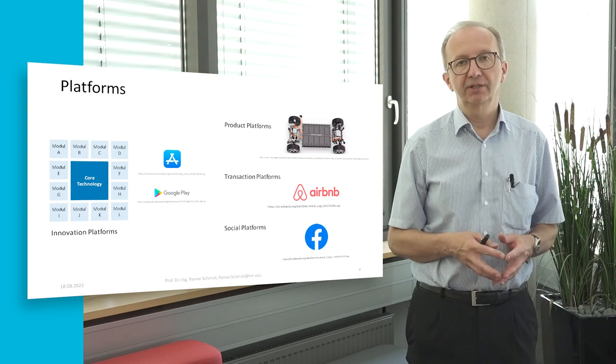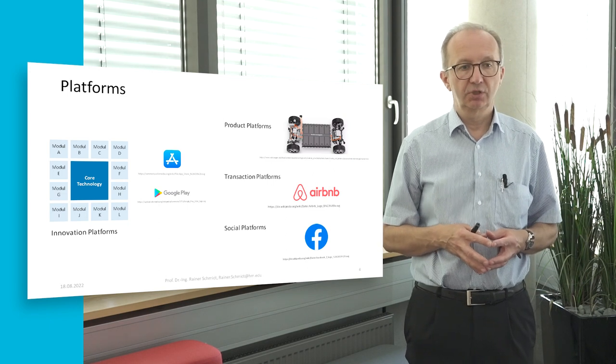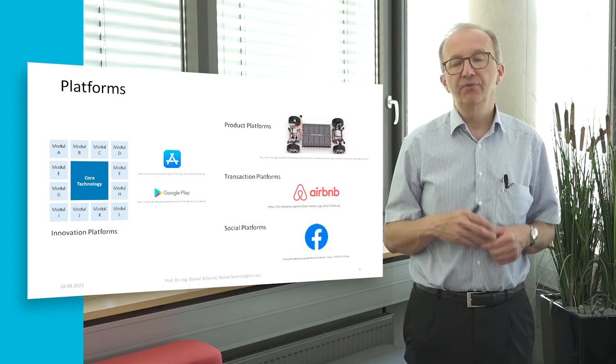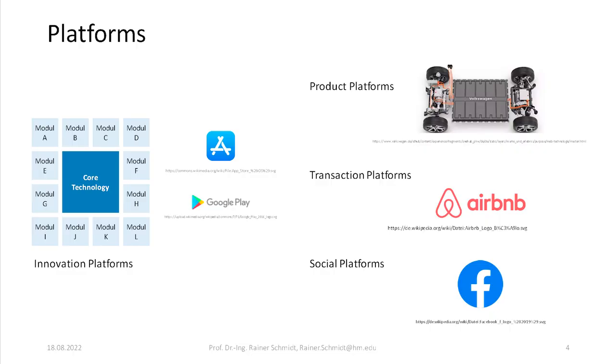First we have to differentiate platforms. Platforms bring together people who look for goods and services together with people who offer goods and services. That's a basic structure and there are different kinds of platforms. Innovation platforms consist of core technology. If you look at your iPhone or your Google phone, you will see there is a core technology — an operating system, either Android or iOS — and there are additional modules that allow you to adapt the functionality of your phone according to your needs. That's the basic structure of an innovation platform.